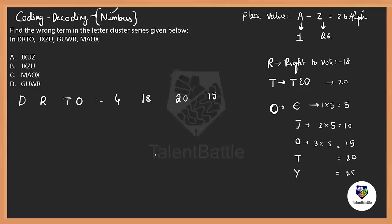Now for the cluster J-X-Z-U: J is 10 from E-JYOTI. X, Y, Z are the last three alphabets, so X is 24, Y is 25, Z is 26. For U, think of it as looking like the number 21 written together — so U is 21.